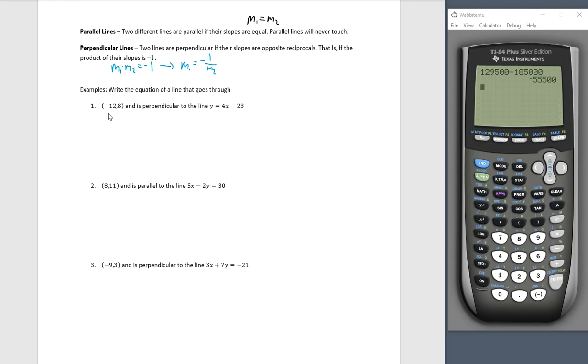Write the equation of a line that goes through this point and is perpendicular to the line y equals 4x minus 23. Now, the first thing, anytime we want to write the equation of a line, we always have to find slope first. So perpendicular and a line are going to help us out here. We know the given slope is 4.